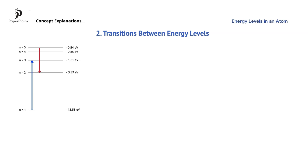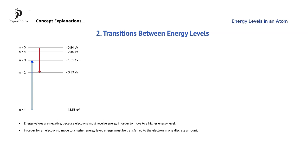You have probably noticed that energy values on this diagram are negative. This is because electrons must receive energy in order to move from a lower to a higher energy level. Moreover, in order for an electron to move to a higher energy level, energy must be transferred to the electron in one discrete amount. This amount must be equal to the difference between the energy values of the two energy levels.